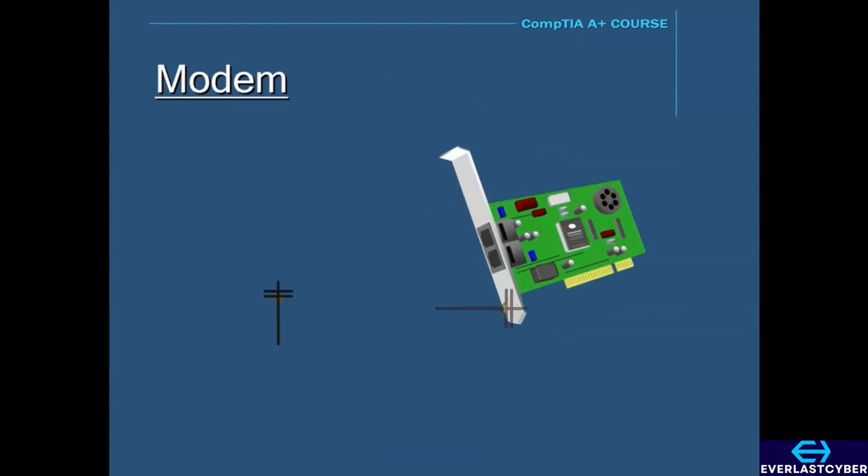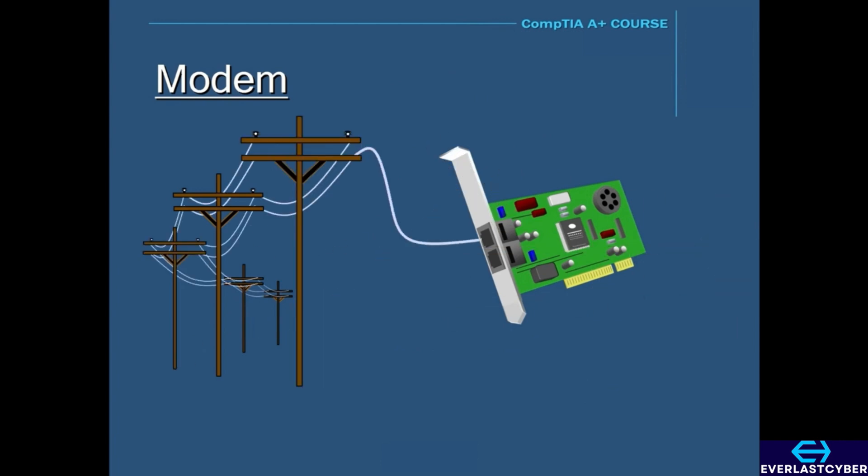A dial-up modem is a device that allows a computer to transmit data over normal telephone lines. The data coming in from the telephone lines is analog. However, the data in a computer is all digital.